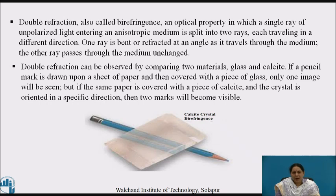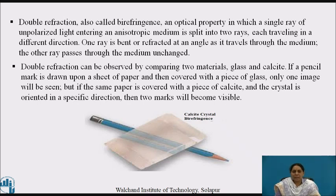If a pencil mark is drawn on a sheet of paper and then covered by a piece of glass, only one image will be seen. But if the same paper is covered by a piece of calcite crystal oriented in a specific direction, then two marks will be visible.